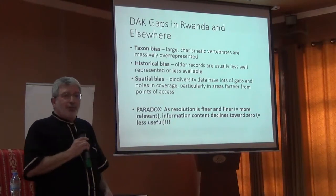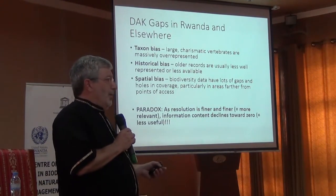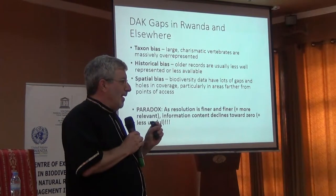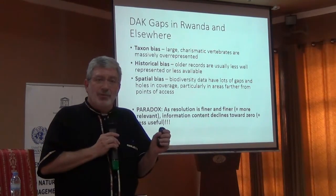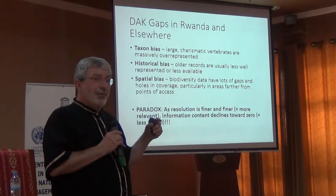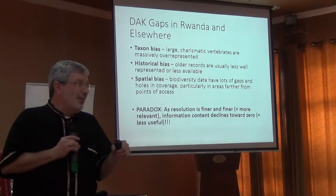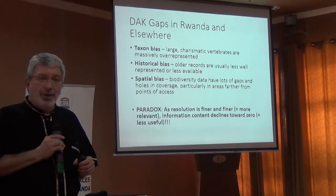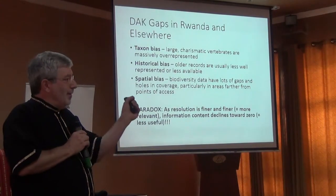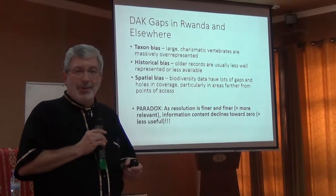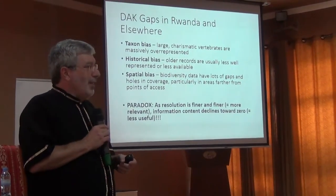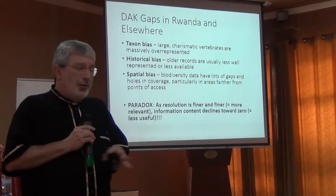This brings us to a very strange paradox. The scale at which management and conservation becomes most relevant, and data can inform those decisions most precisely, is finer and finer spatial scales. And yet, as we go in our biodiversity data to finer and finer spatial scales, our degree of knowledge declines to zero very quickly — and that's everywhere on Earth. If you try to take biodiversity knowledge down to a square kilometer, the percentage of square kilometers that are well known goes to zero very quickly.